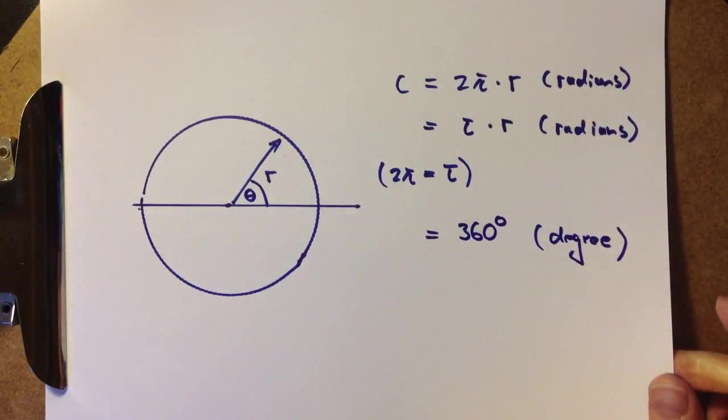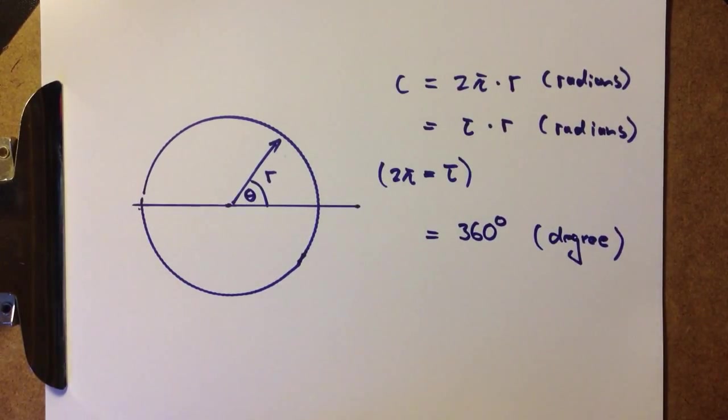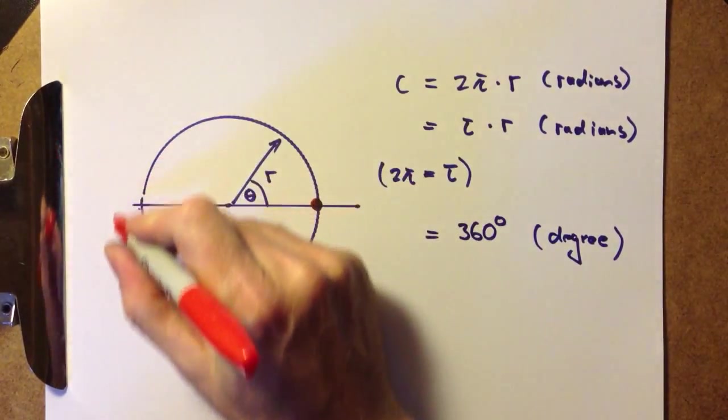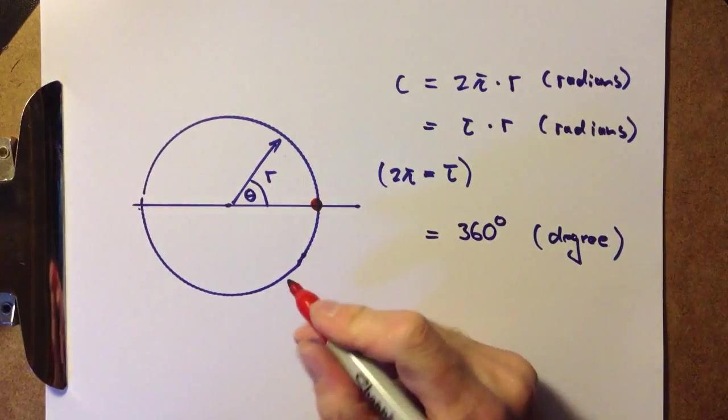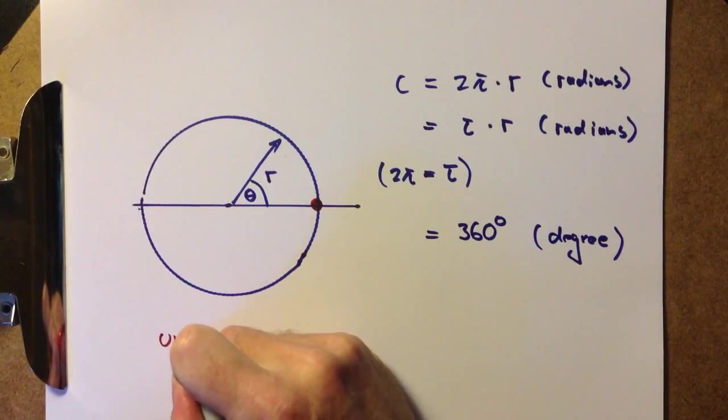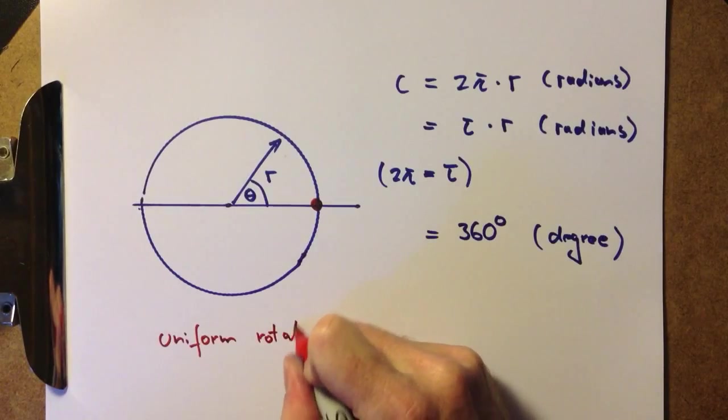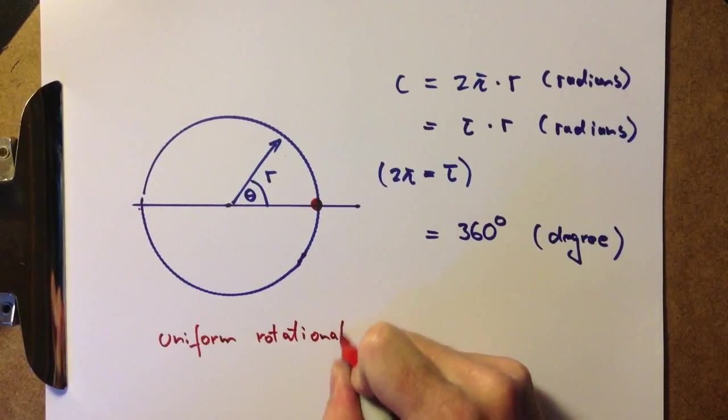Now, what can we do with a circle like this? Well, why don't we put a point mass on it and observe it moving around in a uniform fashion. So we obtain uniform rotational motion.